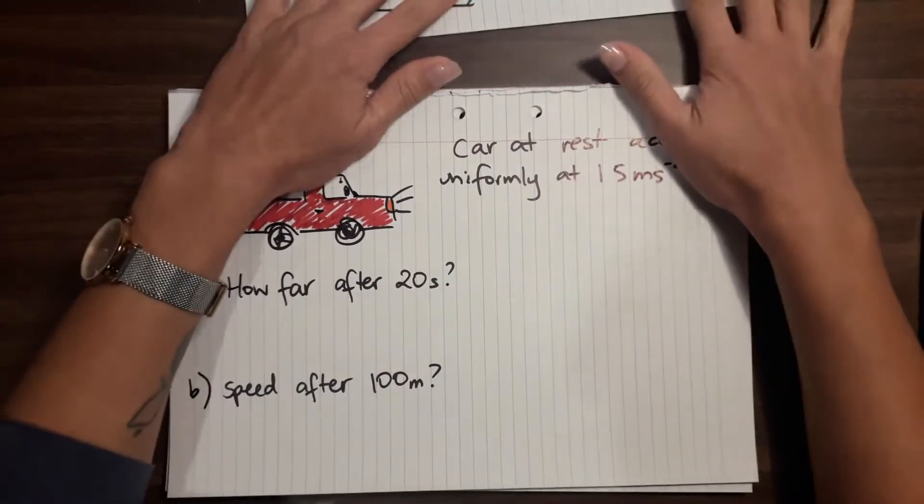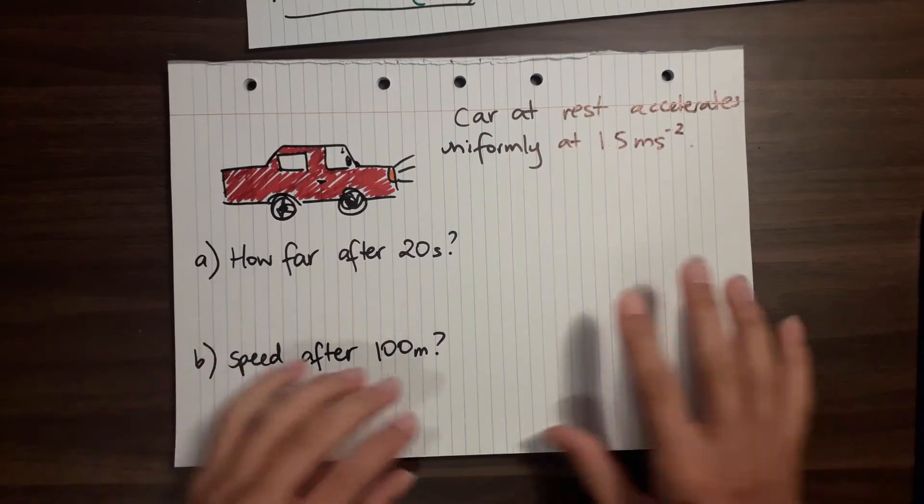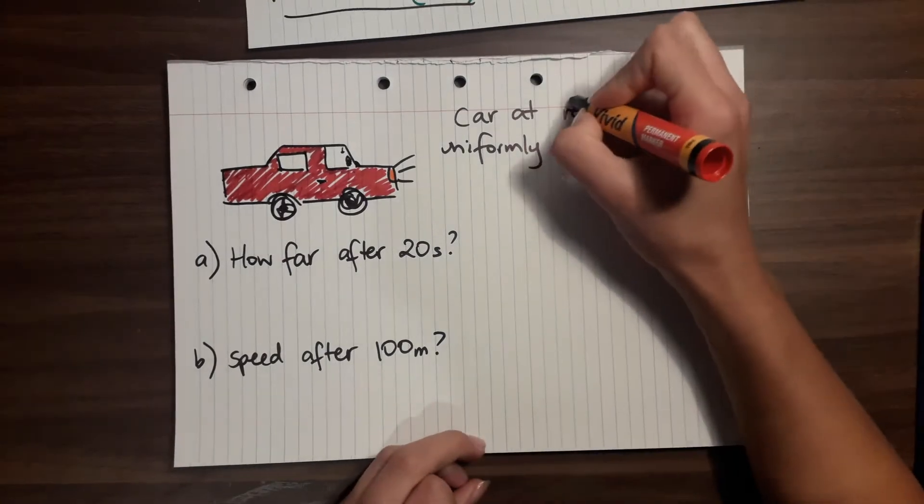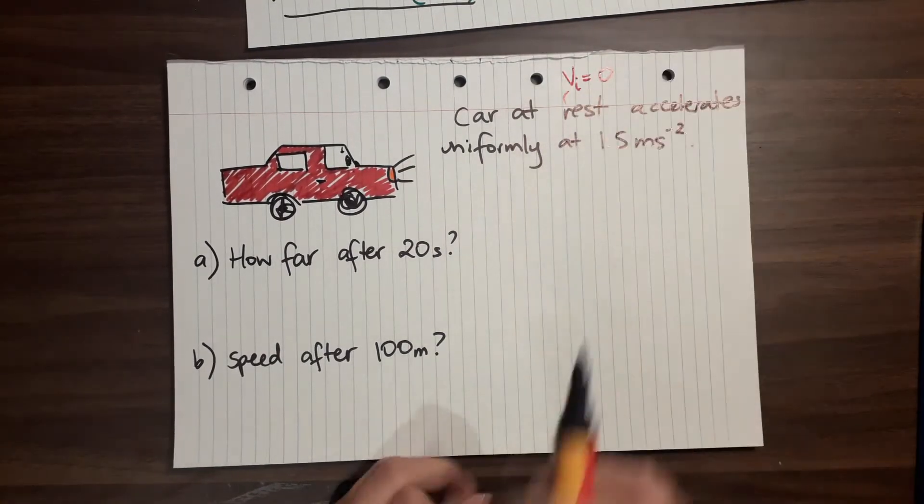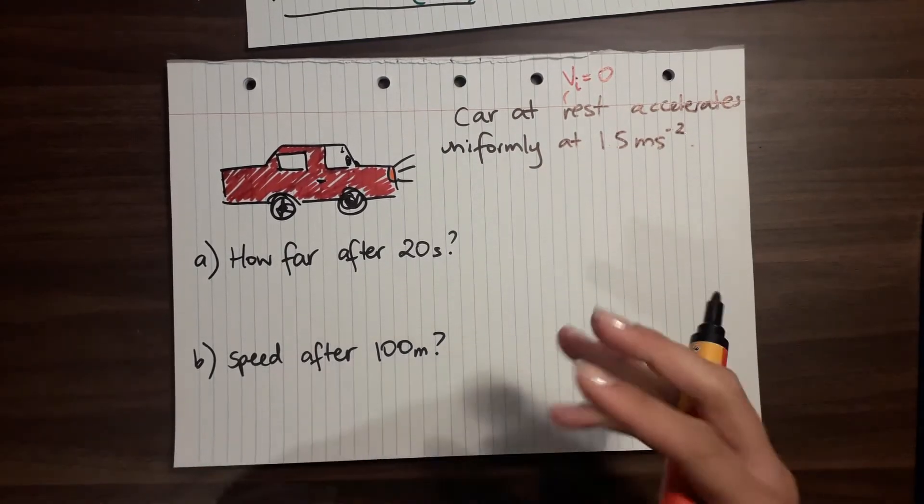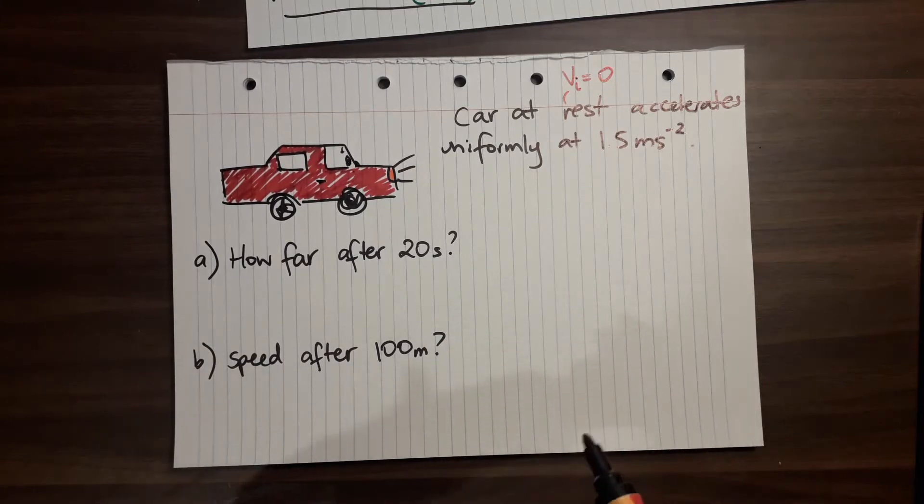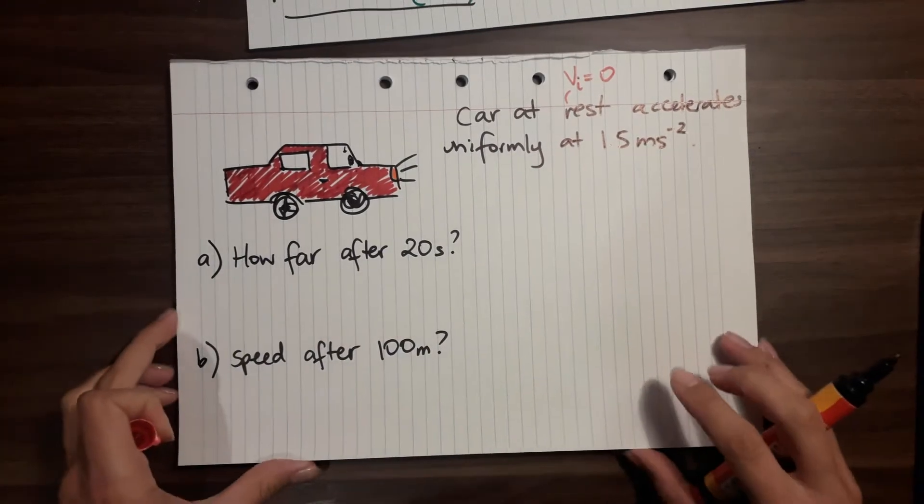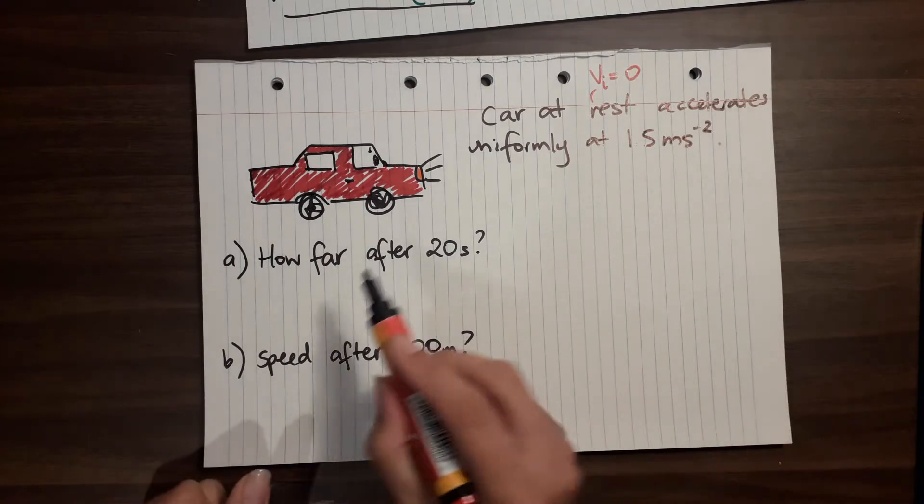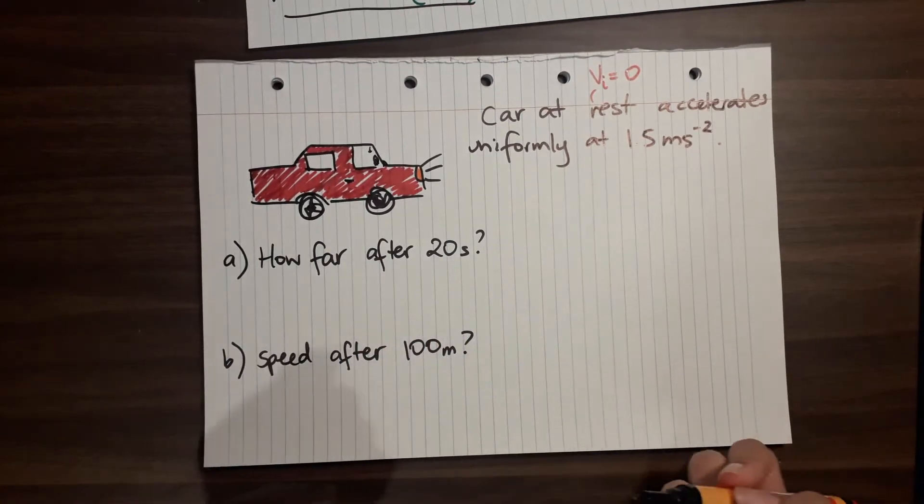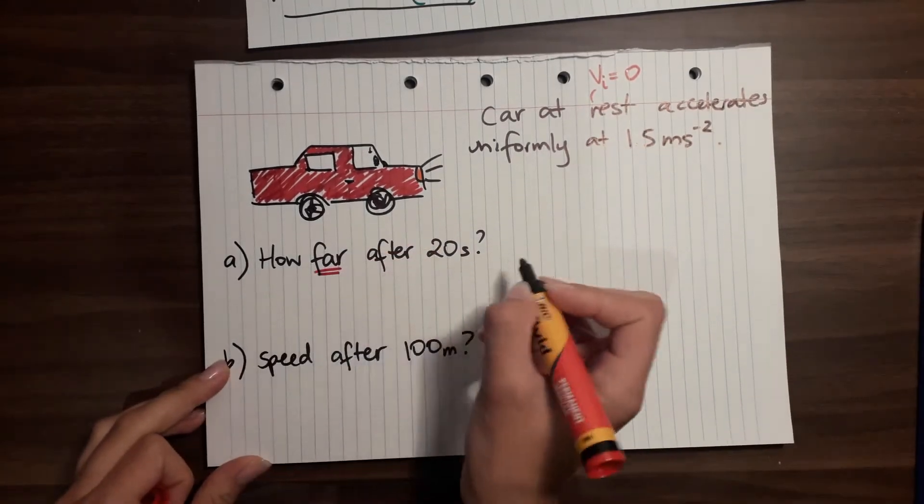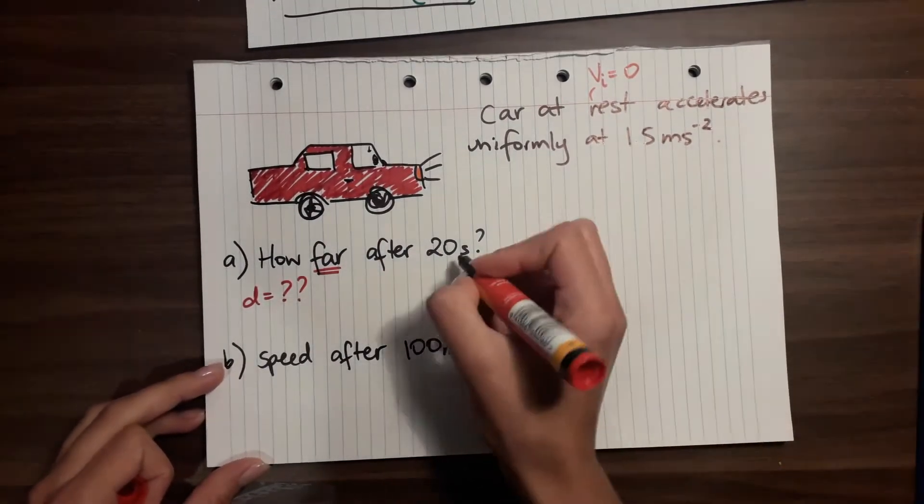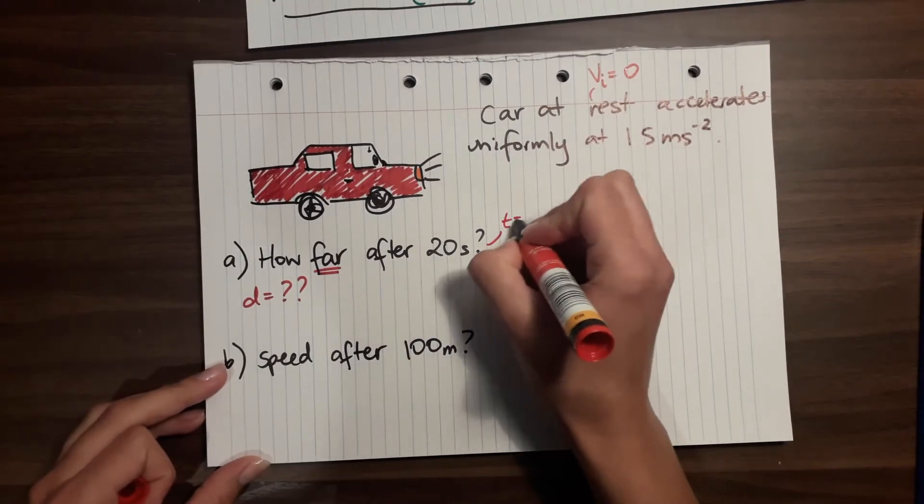So here we have a car - oh my gosh I draw a car. It is at rest. When people say something is at rest, they mean that its initial velocity is zero, and it accelerates uniformly - in other words the acceleration is going to be a constant thing, so it's going to be a constant number - and that number is 1.5 meters per second per second. So if we have this information, how far would the car have gone after 20 seconds? When we say how far, we're looking for what is the distance, and here we've been given another piece of information: we know that time is 20.